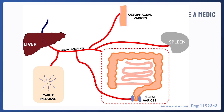Caput medusae is another common exam sign that comes up all the time and refers to dilated veins around the umbilicus. And finally rectal varices as well. Those are the three main sites of portosystemic anastomosis that get dilated and can bleed in patients with chronic liver disease.